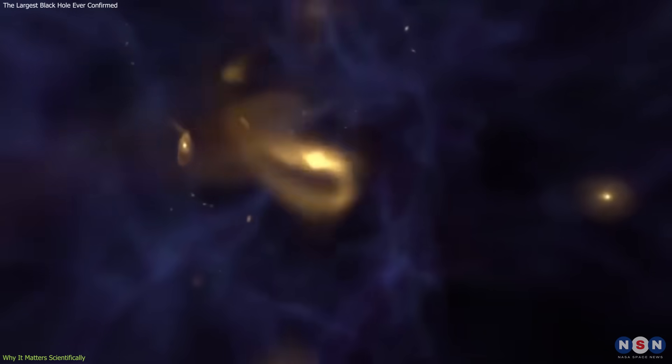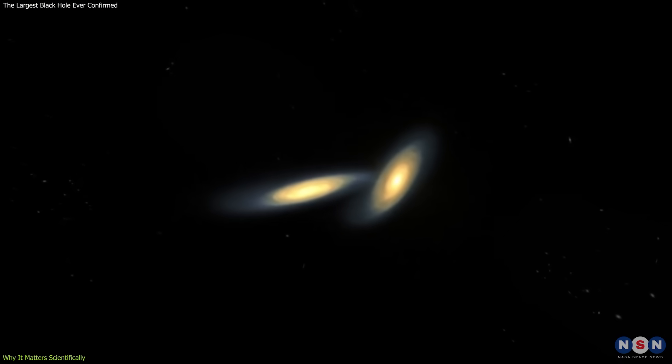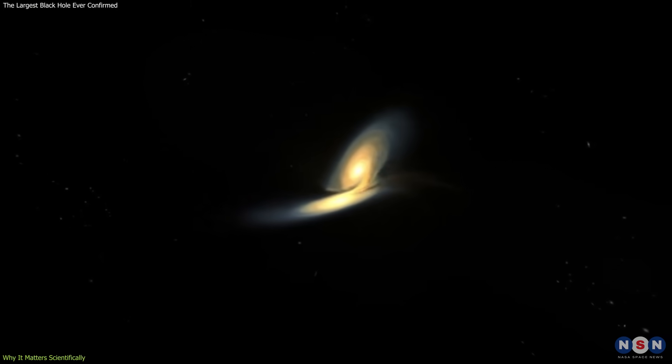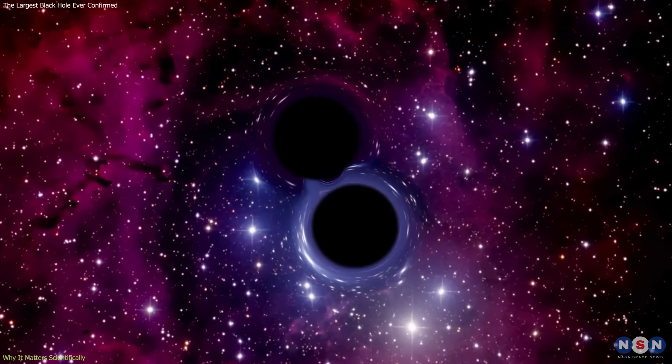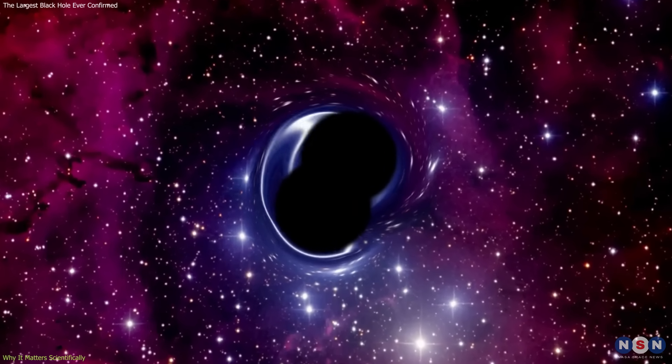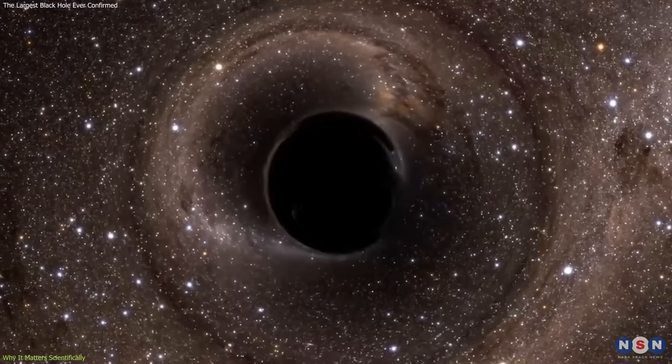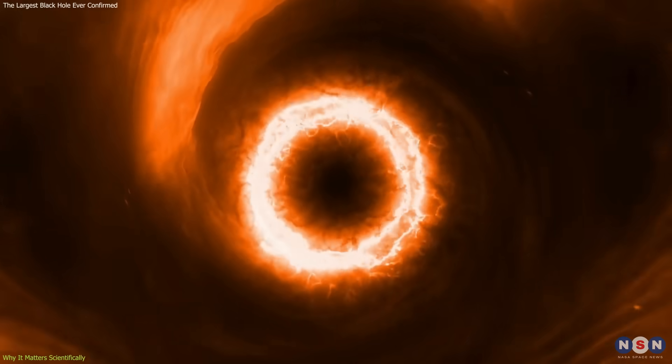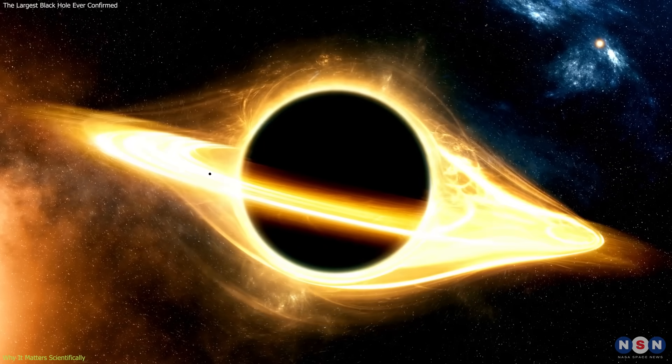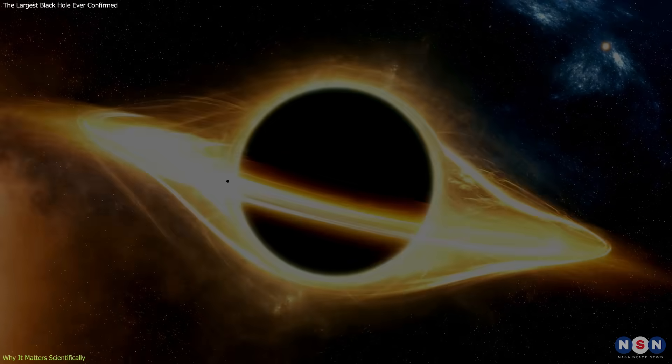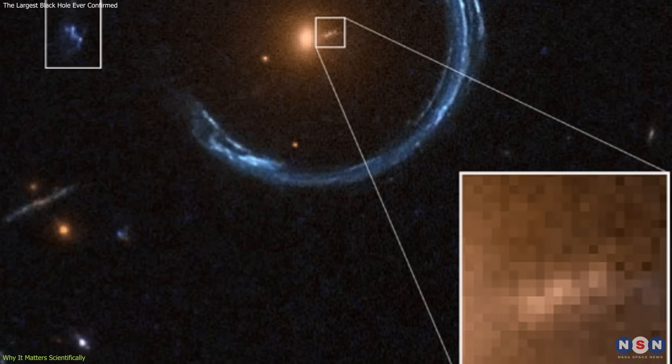One explanation is galaxy mergers. Over cosmic history, galaxies frequently collide and merge. When this happens, their central black holes also merge, creating progressively larger ones. Repeated mergers, combined with long periods of accreting gas, could explain how some of these reach the tens of billions of solar masses. It may be a direct outcome of such a history.